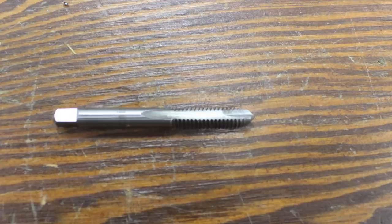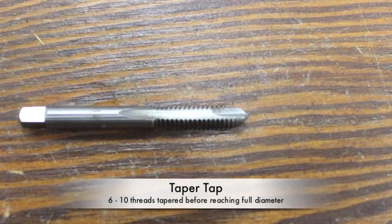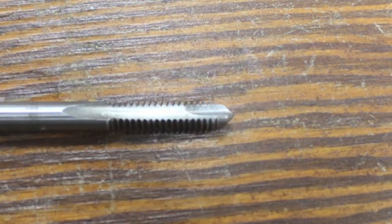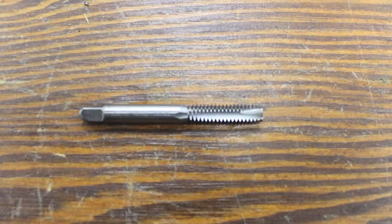Taps come in different forms. To start threads, a taper tap is used. This tap has 6 to 10 threads tapered before the full diameter threads are reached.